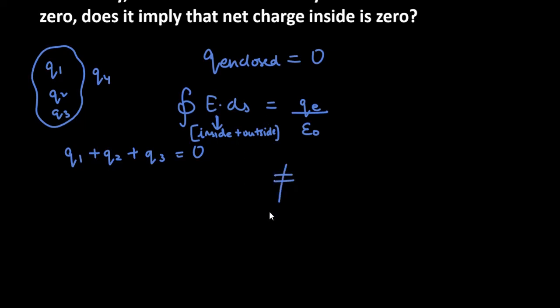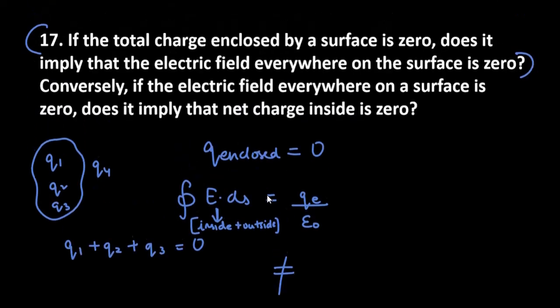We cannot say that if charges inside are zero, then electric field outside will not be there. This is not possible, it is not equal to zero. So this is the first case.